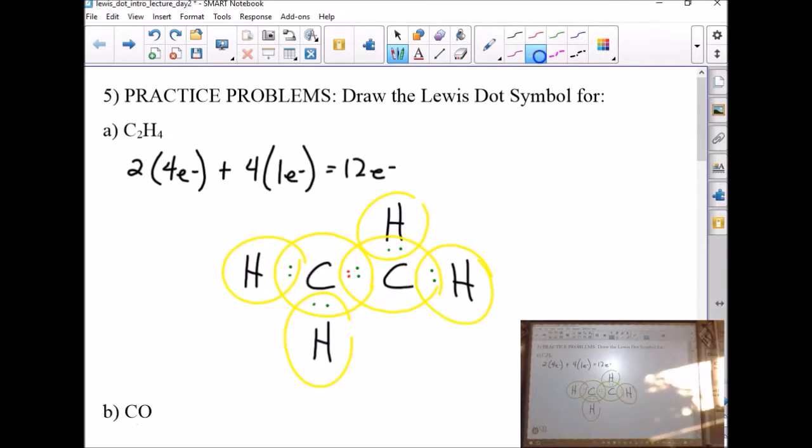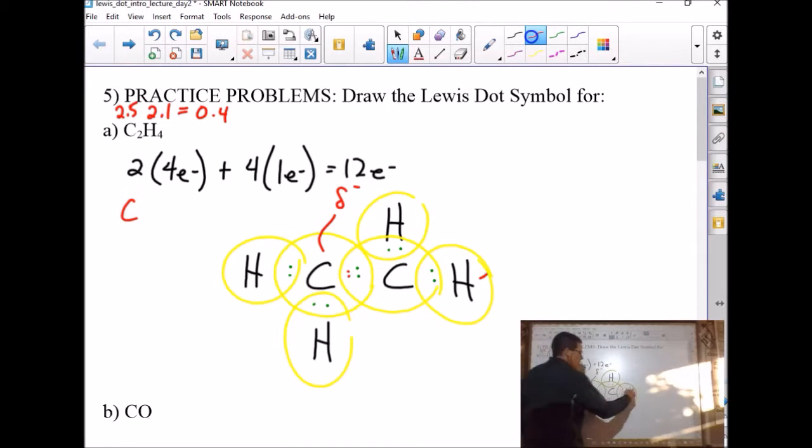So when we have our eight, everybody's happy. And then go ahead and circle it up for the hydrogens as well. Now, looking at the partial charges, they're not sharing these electrons evenly. Carbon has a value of 2.5. Hydrogen's a value of 2.1, so it's a difference of 0.4. So who is going to be partial negative here? Carbon, because it has a higher value. So we assign the more negative charge to the element that has the higher electronegativity value. And then hydrogen is partial positive.